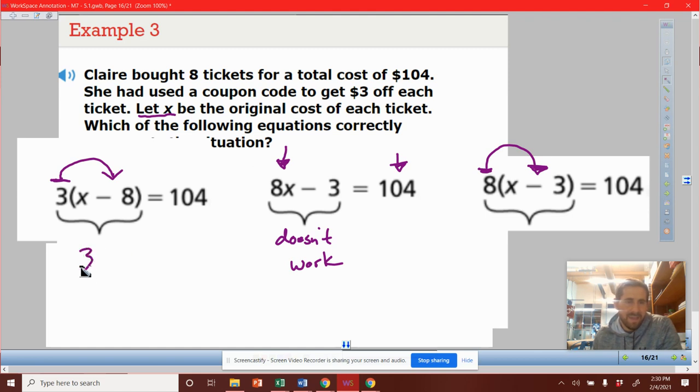If we did this, and we kind of made it look like the original equation we had here, we'd get 3x minus 24 equals 104.